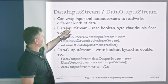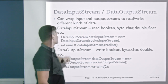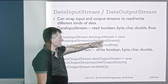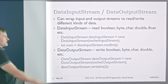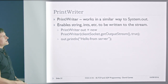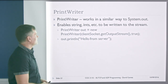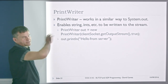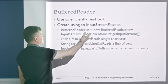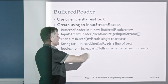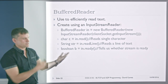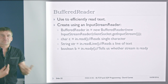You can wrap the input stream in a DataInputStream to read booleans, bytes, chars, doubles, and so on. You create a new DataInputStream and pass in its constructor the input stream, then call readInt() or whatever. You can do the same with DataOutputStream to write booleans, bytes, chars, doubles, etc. You can also use a PrintWriter to wrap the output stream and do things like out.println(), similar to System.out.println(). And you can use a BufferedReader on the input stream to read single characters, read a line of text, and check whether the stream is ready.